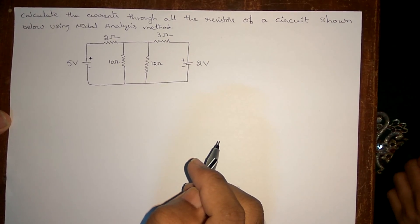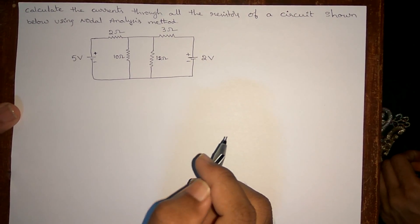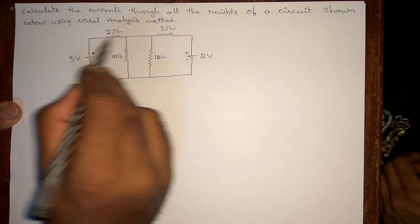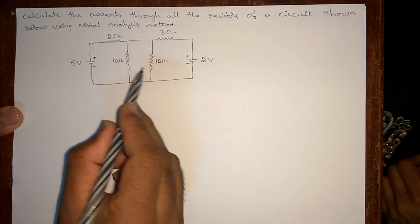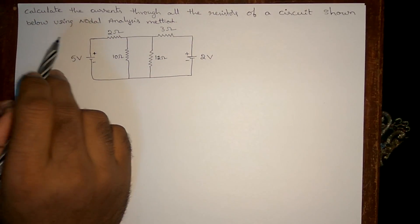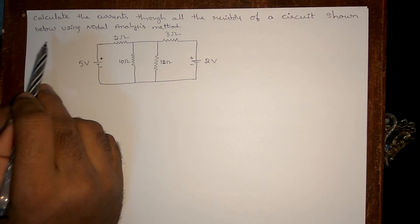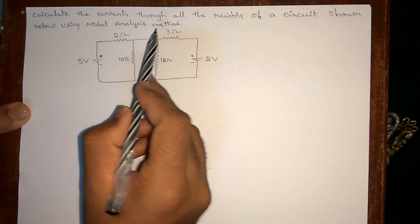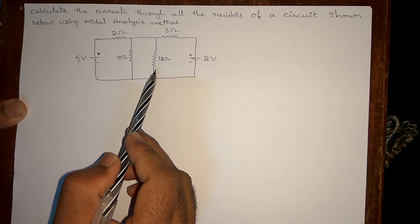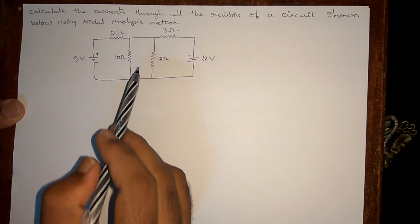In this video I am going to show you how to perform nodal analysis for a given circuit. The question here is: calculate the currents through all the resistors of the circuit shown below using the nodal analysis method. We have a number of resistances and we have to calculate the currents flowing through them.